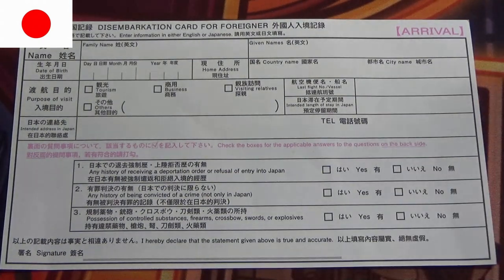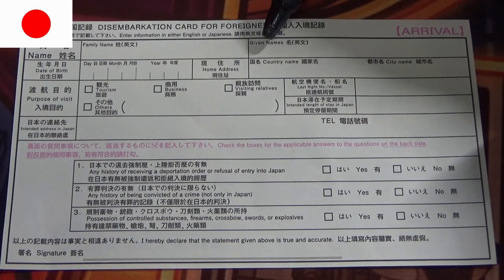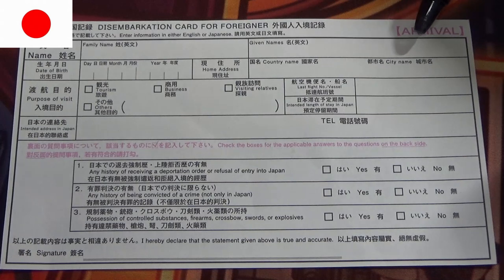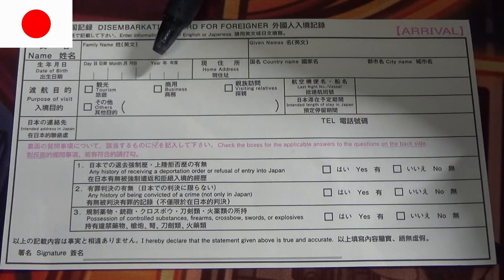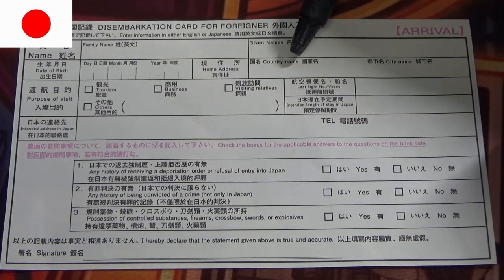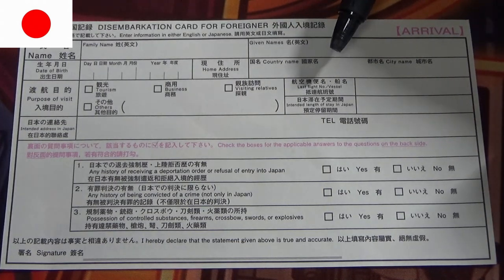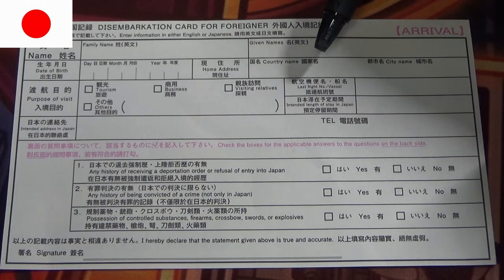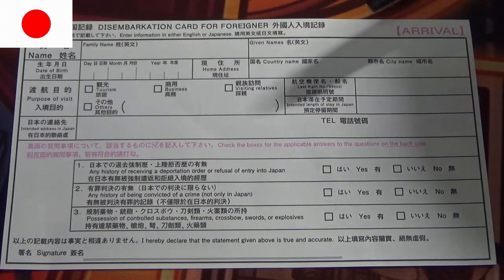Assuming you're entering Japan as a tourist: here you will write your family name, that is your surname. Next is your given names — whatever is on your passport, so your first name and middle name. Date of birth: write the day, month, year. Home address — country name. So if you're from the USA, you would write USA or America. If you're from Canada, you would write Canada. That's your home country. In my case, it's Japan — I live in Japan. Then city name, the city of the country you're from.